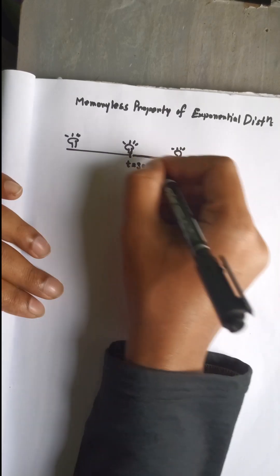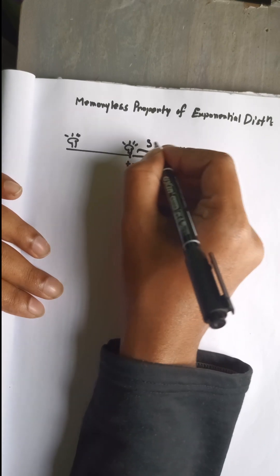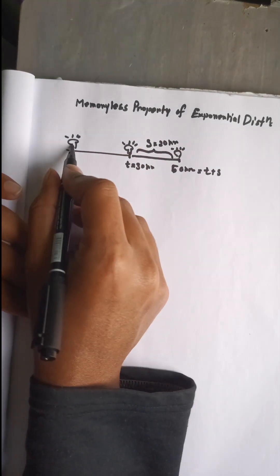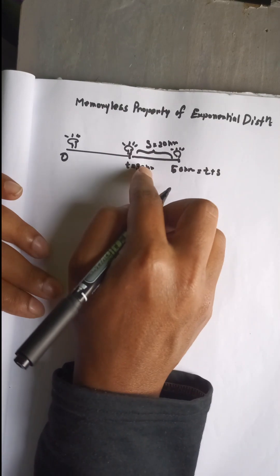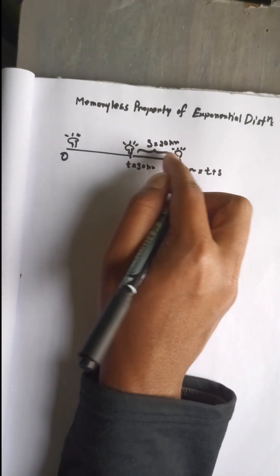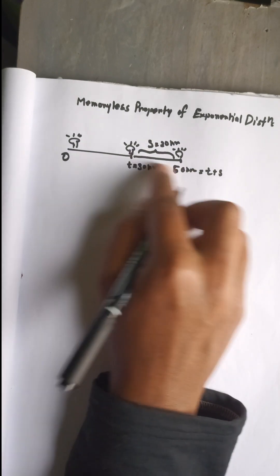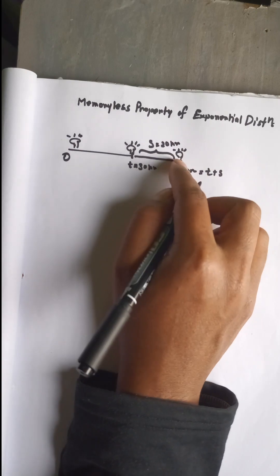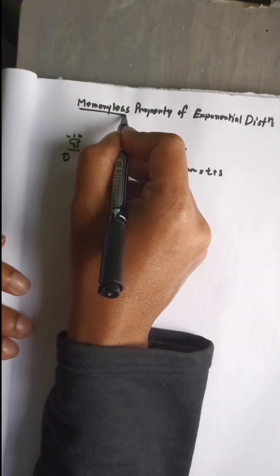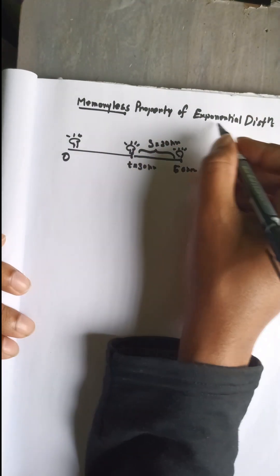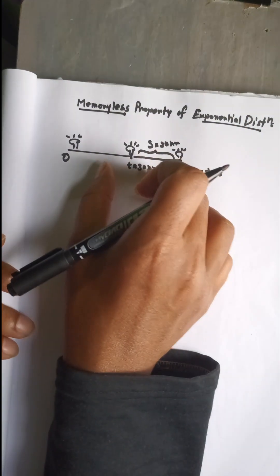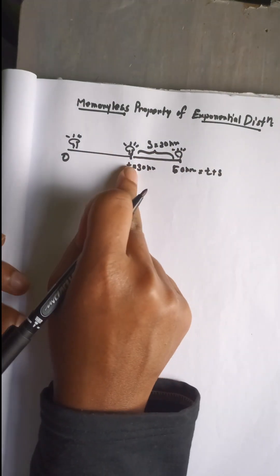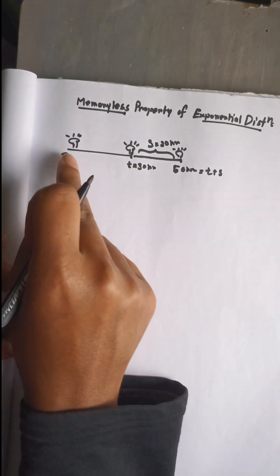We denote the additional time period as s, which is 20 hours. So first the light bulb survived from 0 to 30 hours, then it survived a little more — 20 hours — and in total 50 hours from 0 to 50 hours. In terms of the memoryless property, when I apply the exponential distribution to model this, something interesting happens.